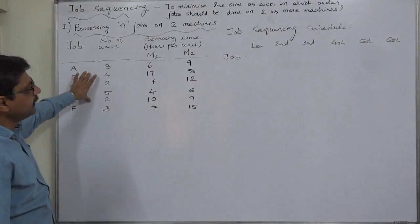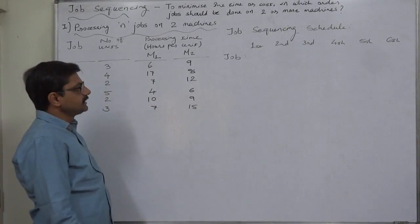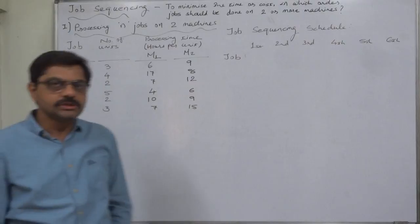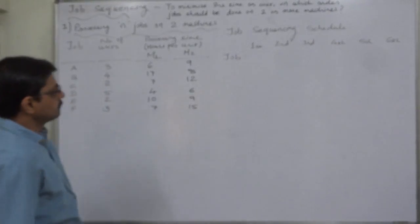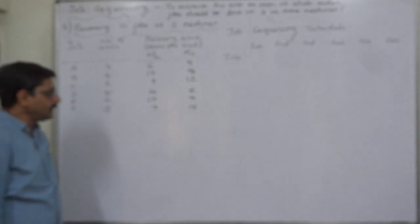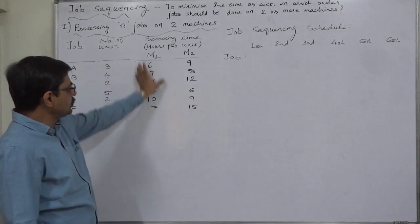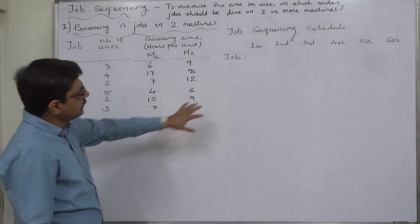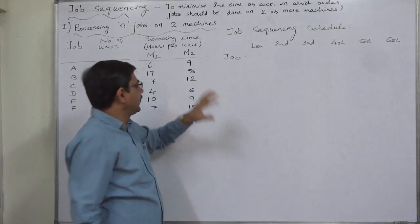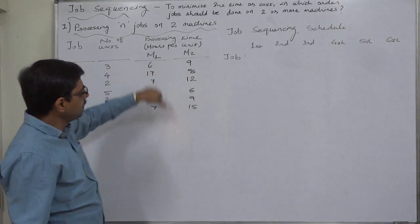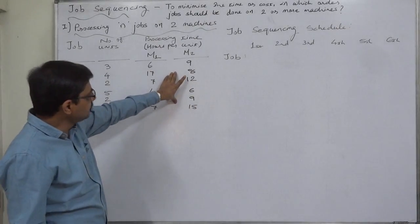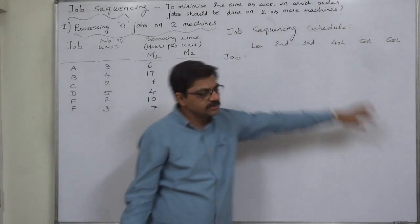According to Johnson's algorithm, the process is very simple. If the lowest time is on machine one or the first machine, the job is placed on the left-hand side of the schedule. And if the lowest time of the remaining jobs is on machine two, the job is placed on the right-hand side.